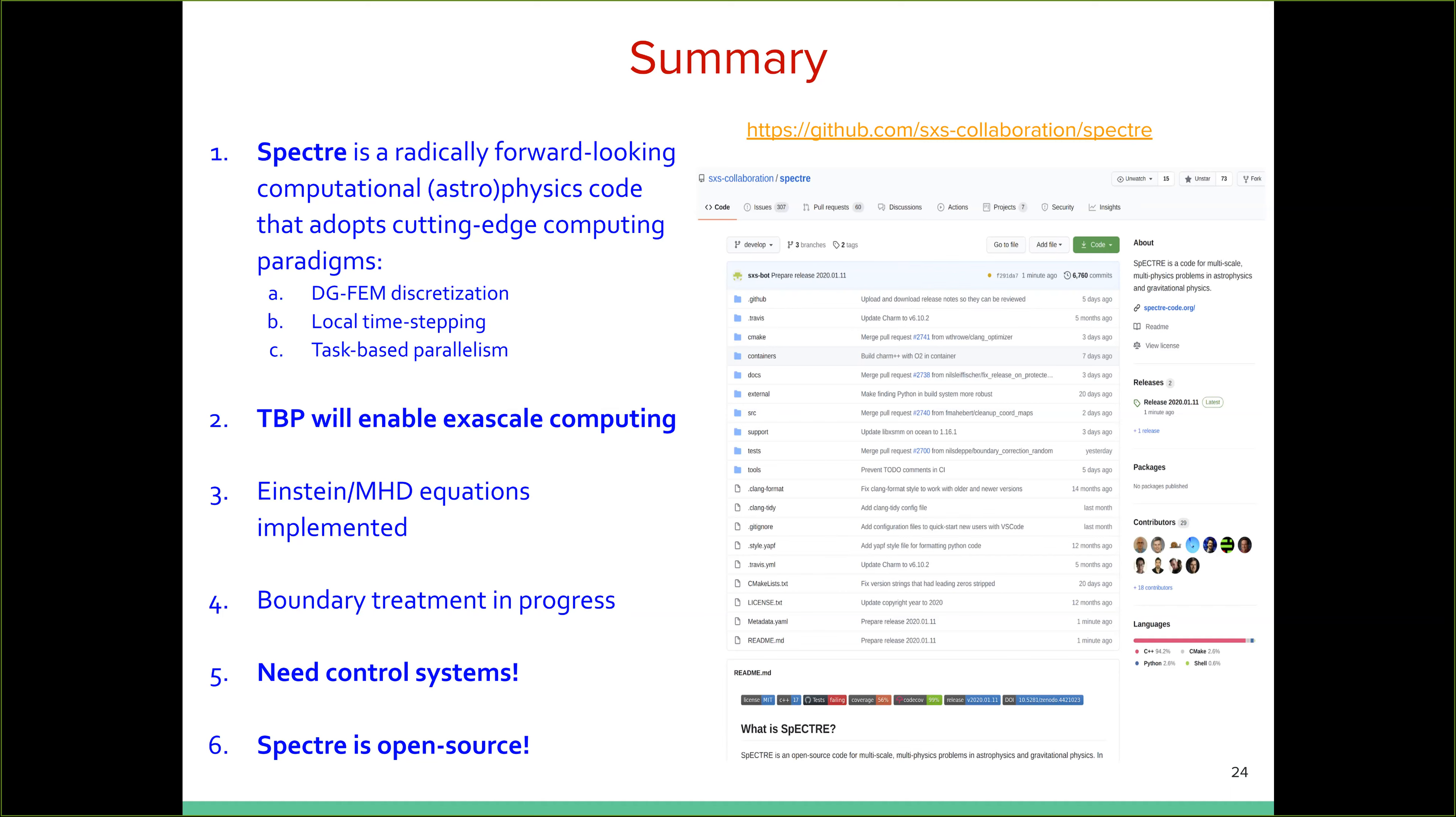And as to the status of Spectre, Einstein and MHD equations have been implemented. We are done with boundary conditions for the evolution systems. We are still awaiting control systems to be implemented, which will control how the adaptive mesh refinement works and how we track the apparent horizons of the black holes dynamically. So that is still ongoing. And I also wanted to highlight that Spectre is completely open source. It's on GitHub and anyone can use it, contribute to it, and we welcome that. So with that, I will conclude.